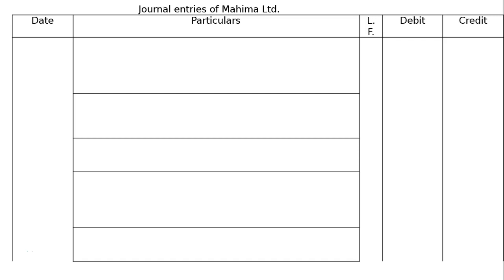The question is: Mahima Ltd issued ₹38 lakh 9% debentures on 1st April 2013. Ignoring interest on fixed deposit, pass necessary journal entries on 31st March 2015 regarding redemption of debentures only.